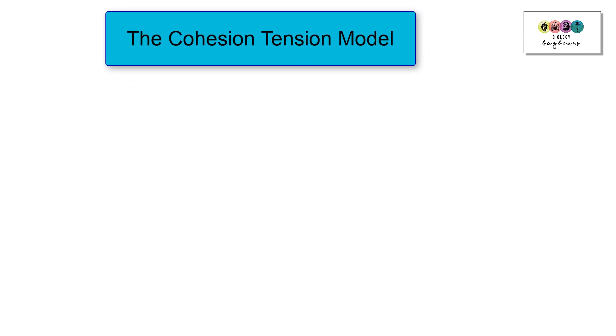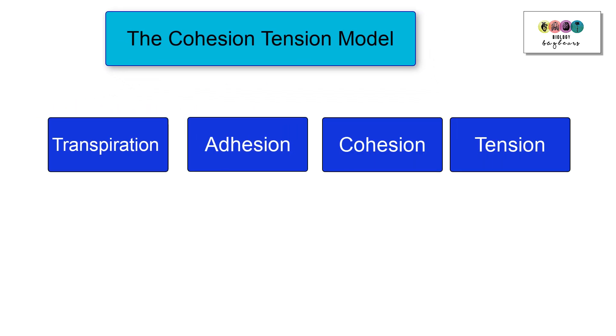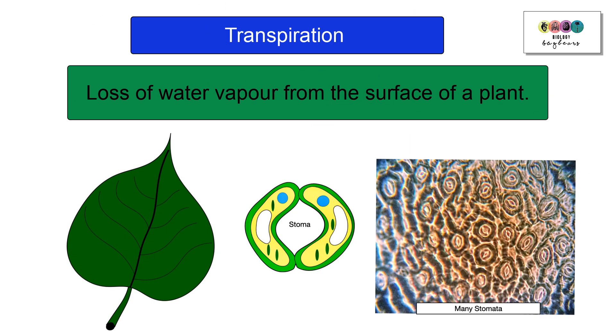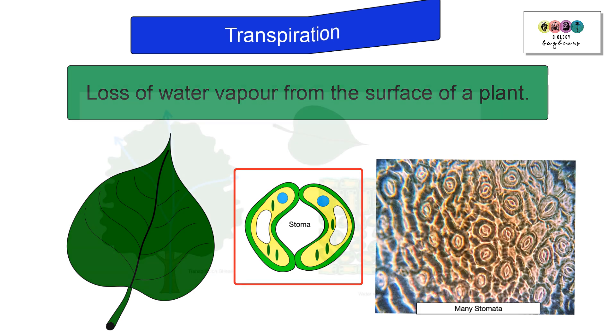When writing about the cohesion tension model, we have to discuss transpiration, adhesion, cohesion, and tension. Let's start with transpiration. Transpiration is the loss of water vapor from the surface of a plant, the aerial parts of the plant, so the leaves. You know that on the leaves there are these openings called stomata, and one of them is called a stoma. Most of them are on the under surface of the leaf.